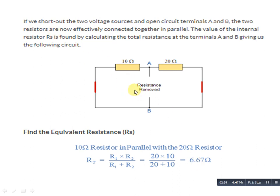Next step is to find RTH, which is also called RN — the Norton equivalent resistance. To find RN, we remove the load resistance, and all battery/voltage sources in the circuit are short circuited. In this circuit both were voltage sources, so both have been shorted. If there were current sources, those branches would be open circuited. Now we need to find the Norton equivalent resistance RN across terminals A and B.